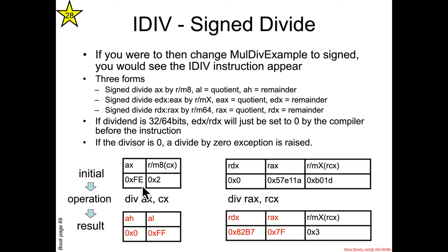So FE, now this is the signed divide, so FE is negative 2 divided by 2 gives you negative 1, remainder 0.